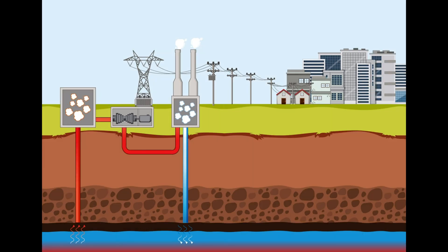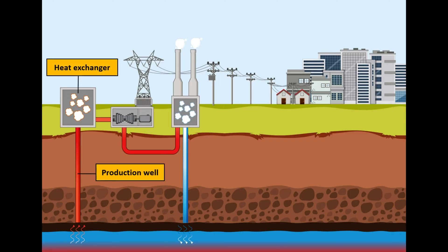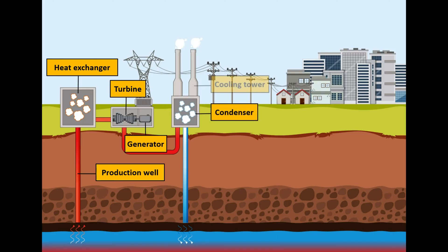Geothermal power plants utilize a production well, heat exchanger, turbine, generator, condenser, cooling tower, and injection well for this purpose.